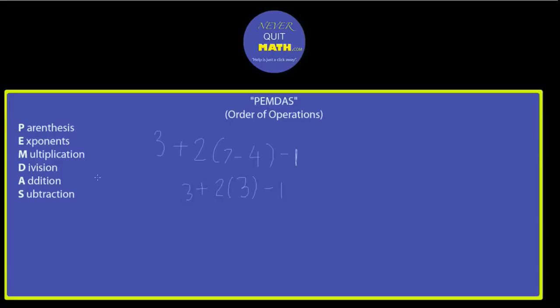Moving on, continuing. Now this next part, it's going to be exponents. Do we have any exponents? No, I don't have any exponents. So the next thing I go to is multiplication and division. Notice multiplication and division, they happen at the same time.